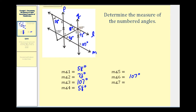Notice that the angle measuring 107 degrees forms a vertical pair with angle one and angle five combined. So the measure of angle one plus the measure of angle five must equal 107 degrees. Since the measure of angle one is 58 degrees, we can find angle five by taking 107 degrees minus 58 degrees, giving us 49 degrees for the measure of angle five as well as angle seven.